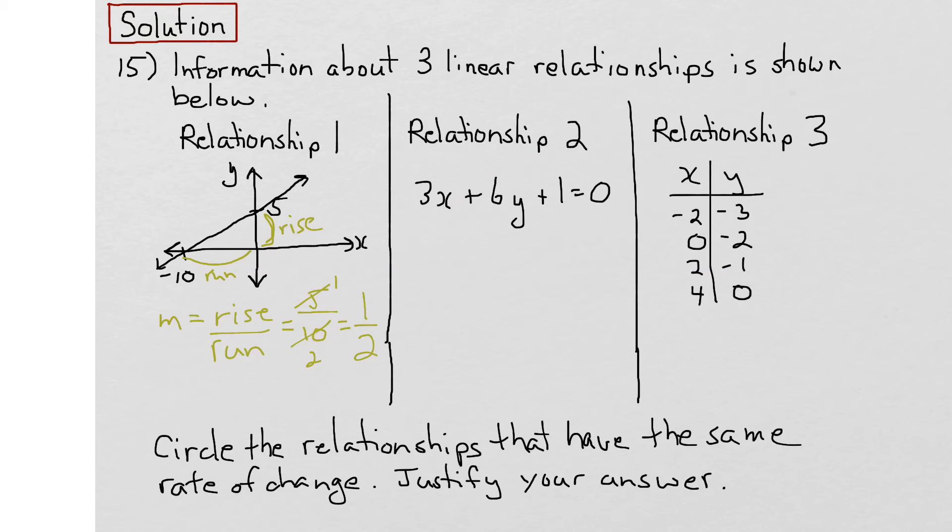For relationship number 2, we're given an equation. If we can put this equation in the form y equals mx plus b, we know that m represents the slope.